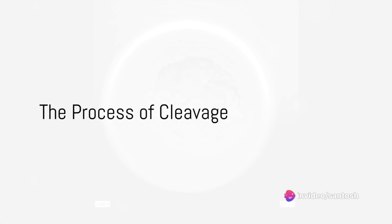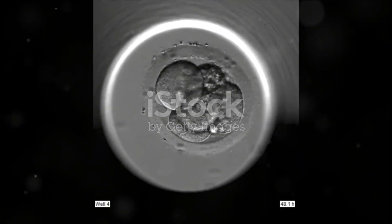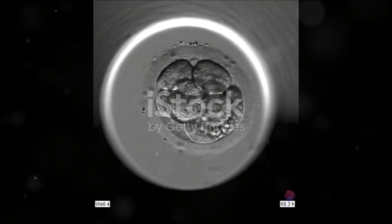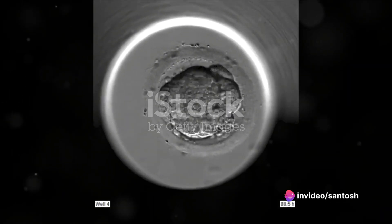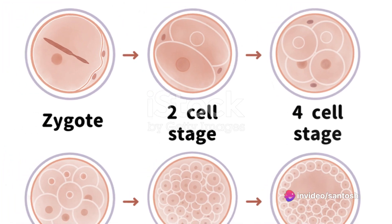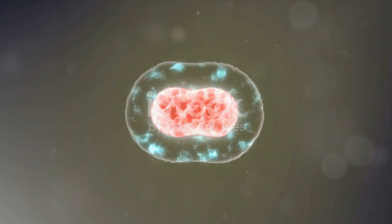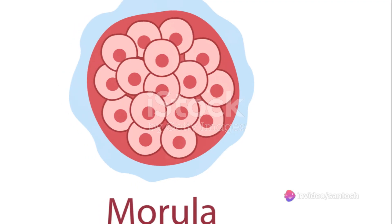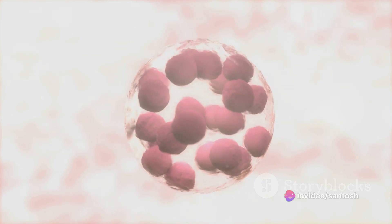The zygote then embarks on a process called cleavage. This is not a division in the traditional sense, but rather a series of rapid cell divisions. The single-cell zygote splits into two, then four, then eight cells, and so on. However, the overall size of the embryo doesn't increase during cleavage. Instead, the cells become smaller and more numerous. This bustling cell multiplication results in a cluster of cells, akin to a mulberry, aptly named a morula.